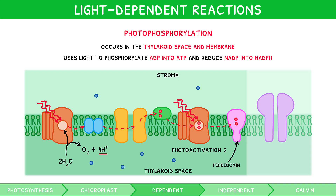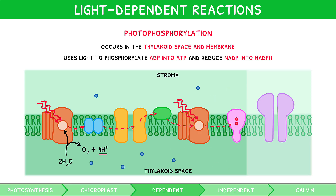Lastly, the ferrodoxin from photoactivation 2 reduces NADP to form NADPH, used in the light-independent reactions. An important caveat, rarely tested in the exam, is that NADP can sometimes run out, preventing this stage. In this situation, ferrodoxin deposits its electrons to the proton pump in the electron transport chain — like plastoquinone — known as cyclic photophosphorylation.